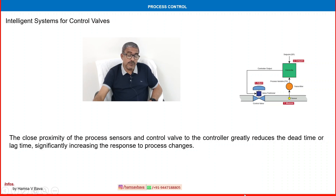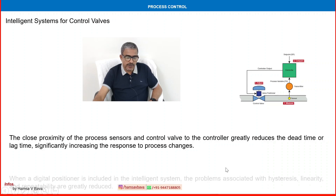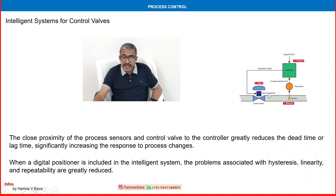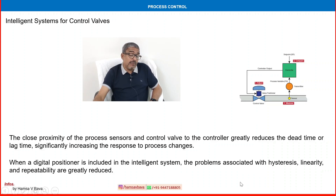When a digital positioner is included in the intelligent system, problems associated with hysteresis, linearity, and repeatability are greatly reduced. Including a digital positioner in the intelligent system enables much better process control to be achieved.